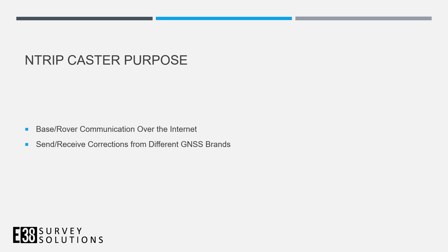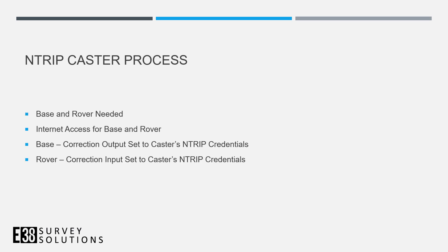Another benefit to using an NTRIP caster is that the communication range between the base and rover is only limited to whether or not you have internet coverage. If you're using an NTRIP caster, you will be casting your own base corrections over the internet and your rover will receive those corrections. Both the base and the rover must have access to the internet.